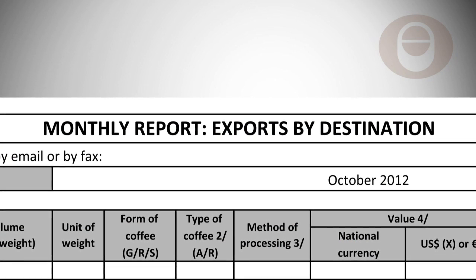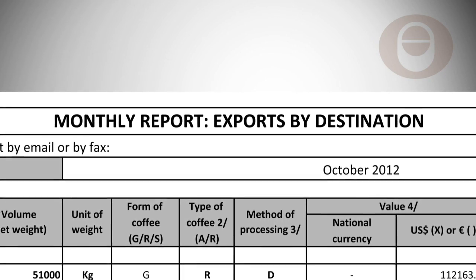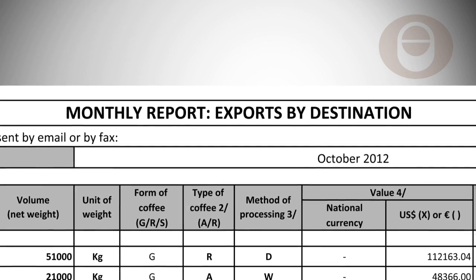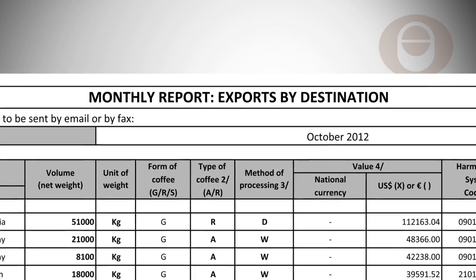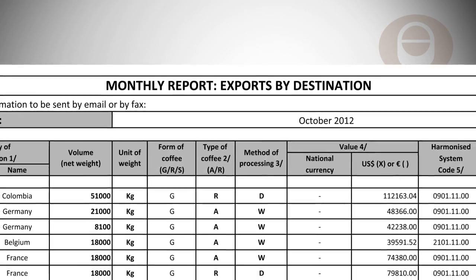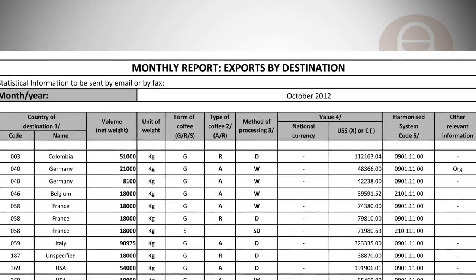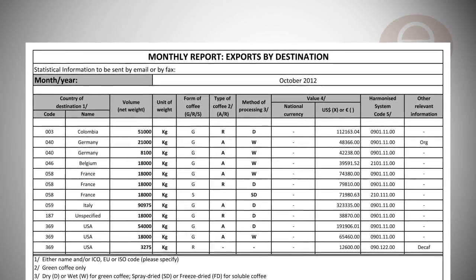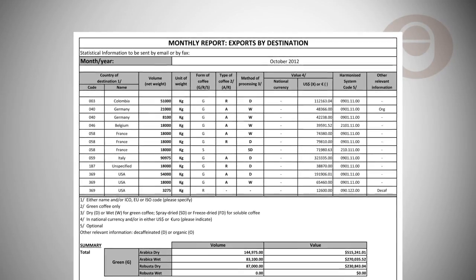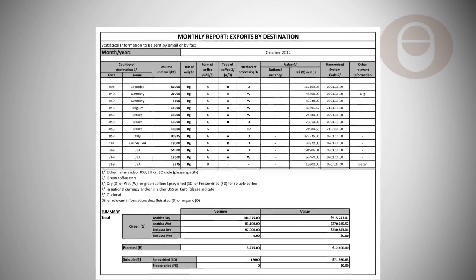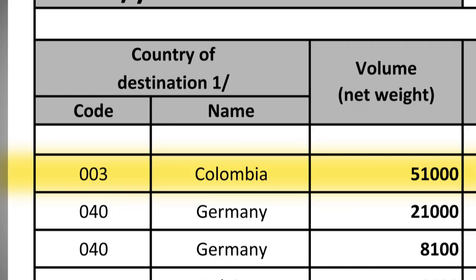The statistical report for the month of October 2012 can then be created and emailed to the organisation, with data extracted from the 20 Certificates of Origin issued to cover shipments from exporting member 999 in October 2012. This should be presented as an Excel file or compatible format.